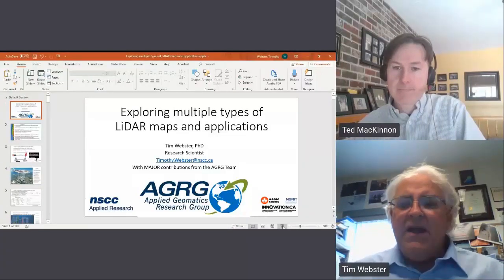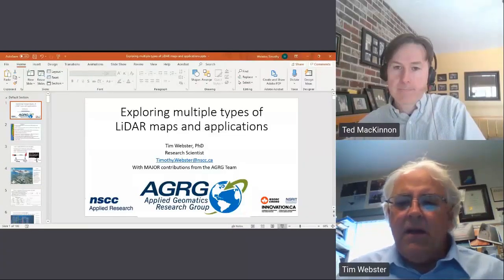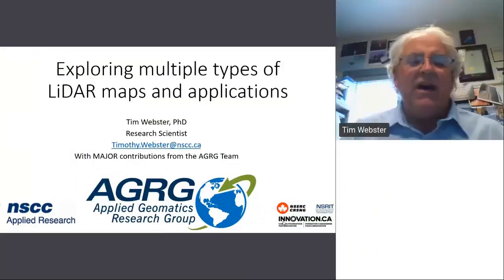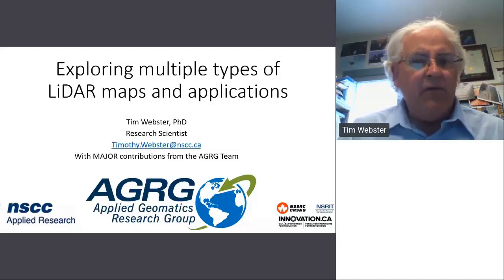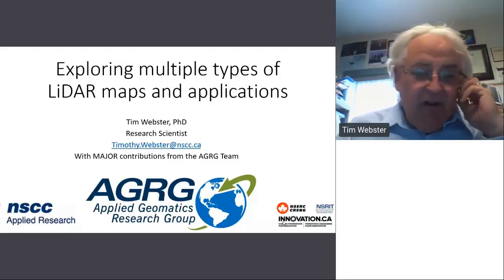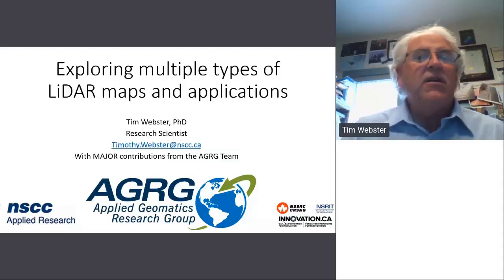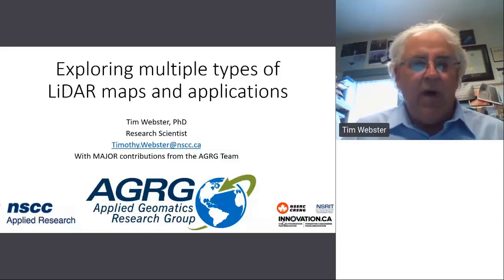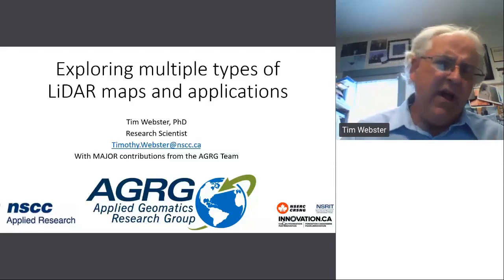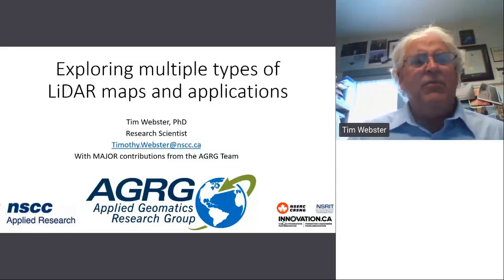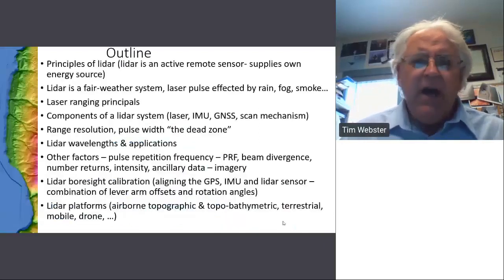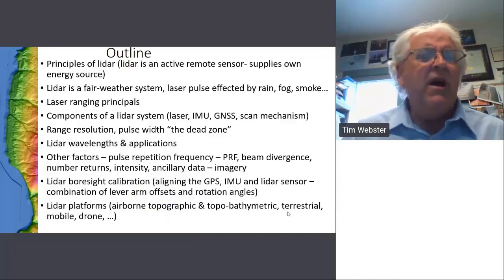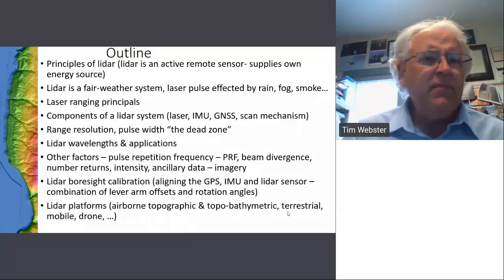For those who may not be aware of who the Applied Geomatics Research Group is — basically we're a spin-off research group from COGS. We were established in 2000; myself, Bob Mayer, and David Colville started things off. Now I run the AGRG group and have anywhere from about 10 to 20 people with me. I'd like to acknowledge the major contributions from my team for this presentation.